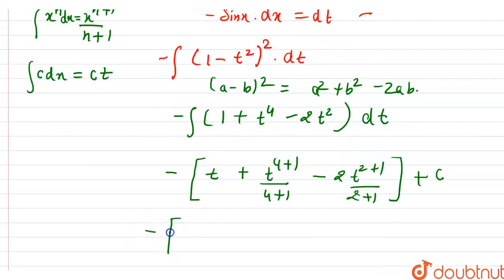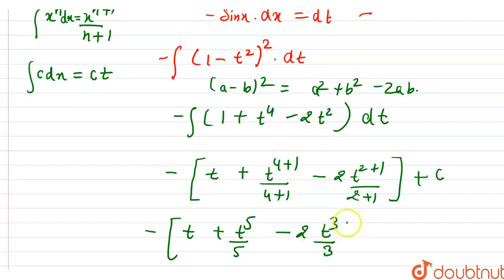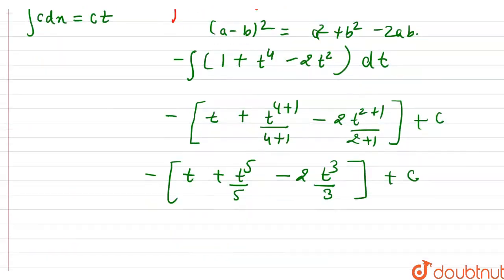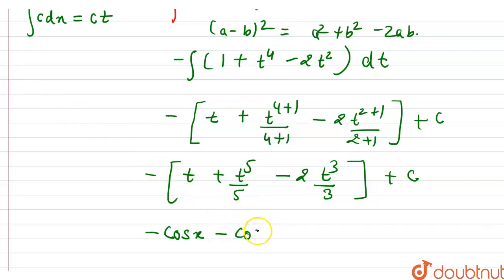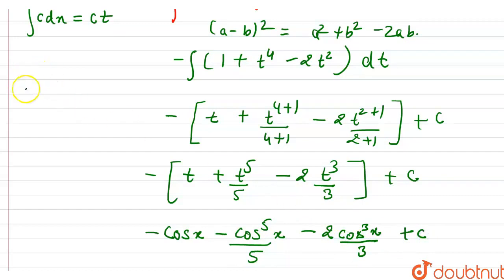After simplification we get: minus t plus t raised to power 5 divided by 5, minus 2t cubed divided by 3, plus c. Since t equals cos x, after replacing t by cos x and distributing the minus sign, the final answer becomes: minus cos x minus cos raised to power 5 x divided by 5 plus 2 cos cubed x divided by 3, plus c. That is our final answer.